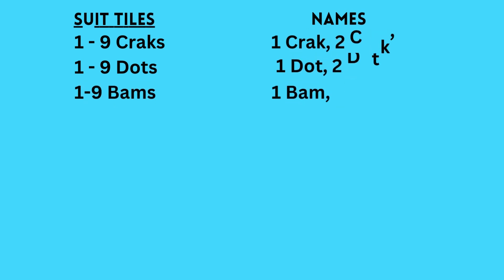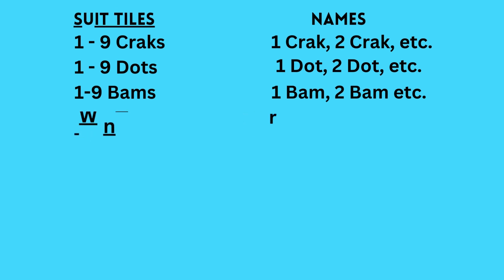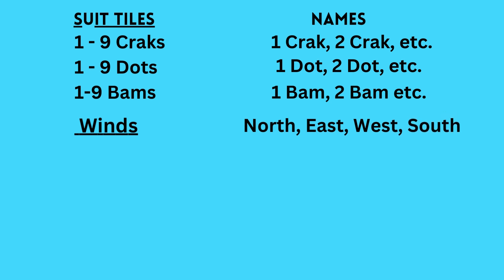So: one crack, two crack, three crack. The dots would be named one dot, two dot, three dot. No plurals are used. And the bams: one bam, two bam, three bam. The next are our wind tiles, and those are simply named by the wind directions: north, east, west, and south.